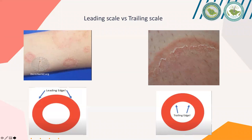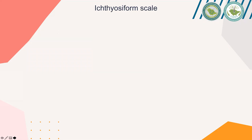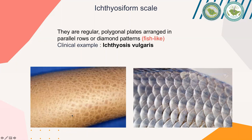The last type of scale is ichthyosiform scale. Ichthyo is a Greek word meaning fish, so this is a fish-like scale. A clinical example is ichthyosis vulgaris, an autosomal dominant condition in which the skin is arranged in a geometric structure — parallel diamonds or rectangles. You can see the resemblance between magnified fish skin and ichthyosis vulgaris skin, which is where the name ichthyosiform scale comes from.